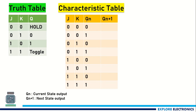Here Qn is the current state and Qn+1 is the next state output. When Qn is equal to 0, meaning if the current state of the JK flip-flop output is 0 and we are providing J=0, K=0 as input, what will be the output?